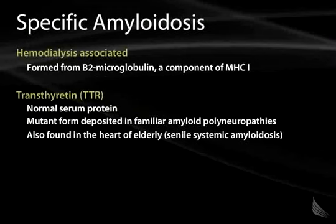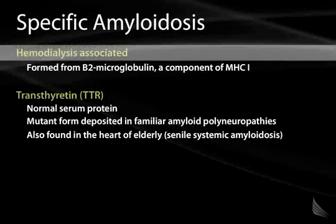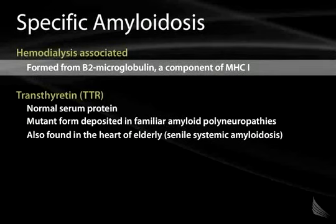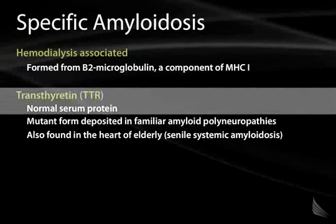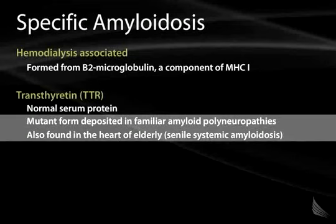A particular form of amyloidosis is also associated with long-term hemodialysis, where it is thought to be formed from beta-2 microglobulin, a component of the major histocompatibility class 1 molecules. Amyloid can also come from a normal serum protein known as transthyretin, or TTR. A mutant form of this protein is deposited in the familial amyloid polyneuropathies, and can also be seen in the hearts of elderly individuals — a condition known as senile systemic amyloidosis.